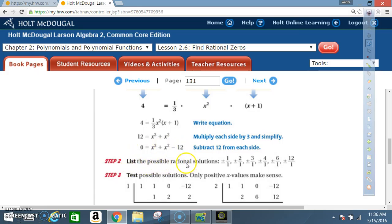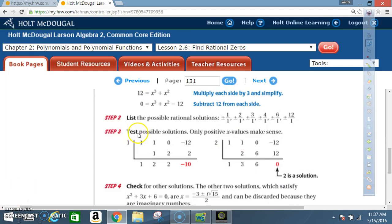Alright, now we're going to list all the possible rational solutions. So we're going to look at this 12. We write all the factors for 12: 1, 2, 3, 4, 6, and 12. And our leading coefficient is 1, so that makes it pretty easy to work. So they're going to be over 1. And now we're going to test for possible solutions. In this case, it's a little bit easier since we're talking about the volume, only positive x values make sense.